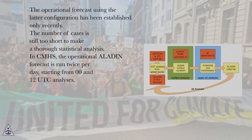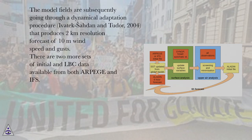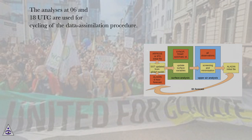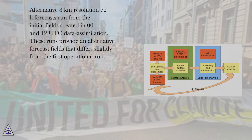In CMHS, the operational ALADIN forecast is run twice per day, starting from 00 and 12 UTC analyses. The operational ALADIN model forecast is run 72 hours in advance on a Lambert projection domain with 8 km horizontal resolution on 37 hybrid sigma-pressure levels in the vertical. The model fields subsequently go through a dynamical adaptation procedure (Ivatek-Saden and Tudor, 2004), producing a 2 km resolution forecast of 10-meter wind speed and gusts. Two more sets of initial and LBC data are available from both RPEG and IFS. The analyses at 06 and 18 UTC are used for cycling of the data assimilation procedure, with only 6-hour forecasts produced and used as first-guess in the data assimilation procedure for the next analysis time (12 and 00 UTC), which initiates the 72-hour forecast. Alternative 8 km resolution 72-hour forecasts are run from initial fields created in 00 and 12 UTC data assimilation.